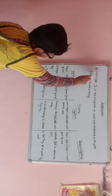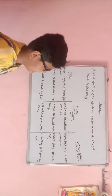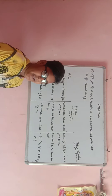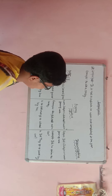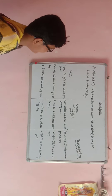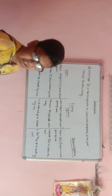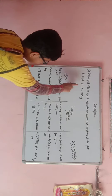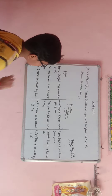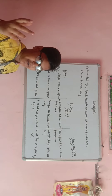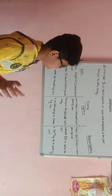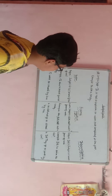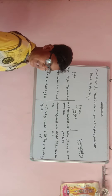In simple past tense, it is used to indicate an action that is completed in the past. For example, 'He ate a candy.' Here 'he' is the subject, and 'ate' is an action that was completed in the past. 'A candy' is the object.